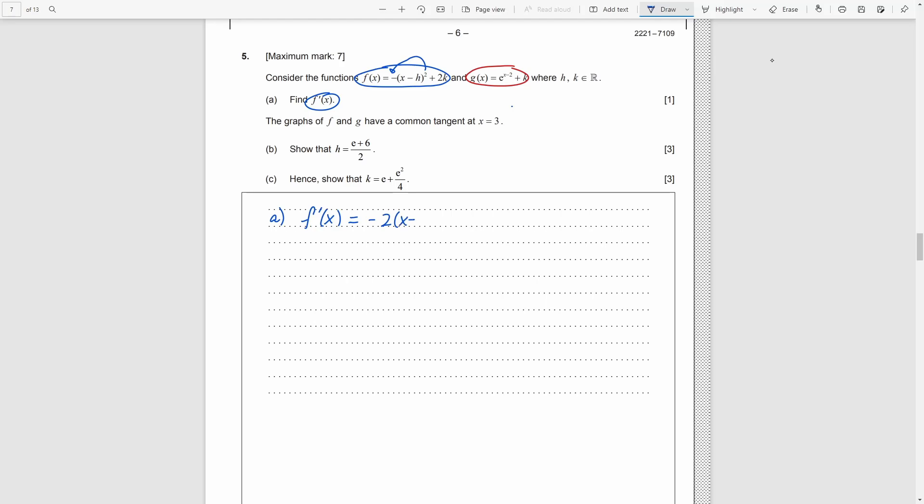Of course, by chain rule, we need to multiply it by the derivative of the things inside the bracket. Anyway, it is just one, so no change. Then, for the second term, it is just a constant. So, it disappears after differentiation.